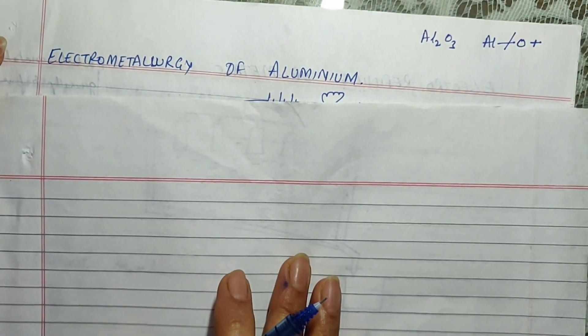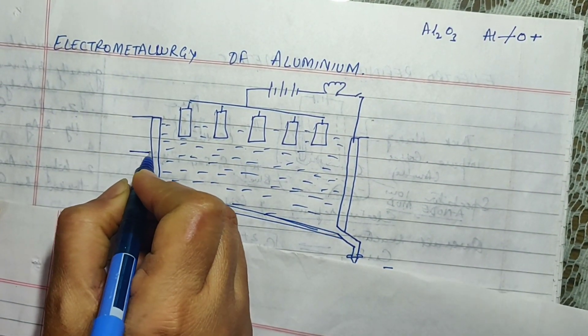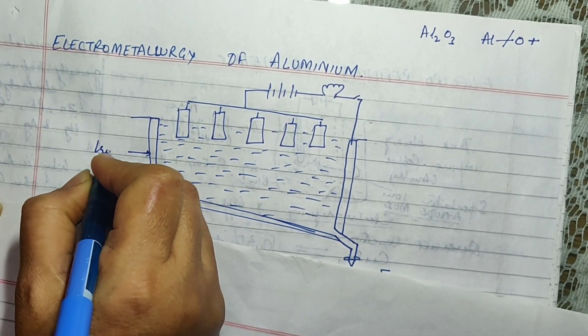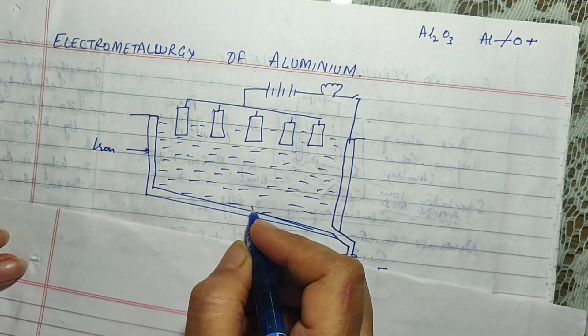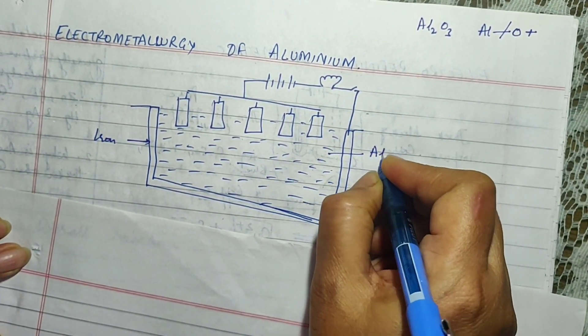Now for the process of electrometallurgy we need to take a tank, electrolytic cell. This one is made up of iron. The electrolytic tank is made up of iron and the electrolyte which is taken inside is Al2O3.